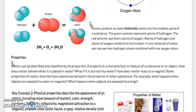Atoms combine to make molecules, which are the smallest parts of a substance. The green spheres, which are kind of blue in this picture, represent atoms of hydrogen. The red spheres represent atoms of oxygen. Atoms of hydrogen and atoms of oxygen combine to form water. In one molecule of water, you can see two hydrogen atoms combined with one oxygen atom.